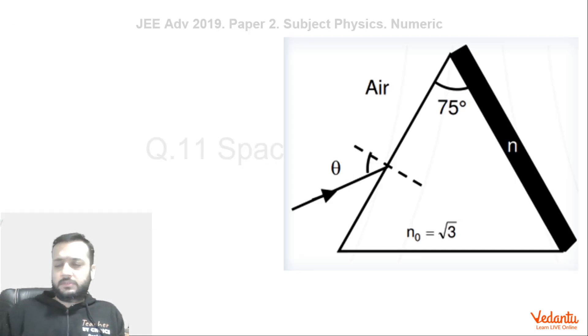So now if you see carefully, if you consider theta as 60, in that case we are claiming that this angle R2 will become critical angle. Why so? It's very easy to analyze.